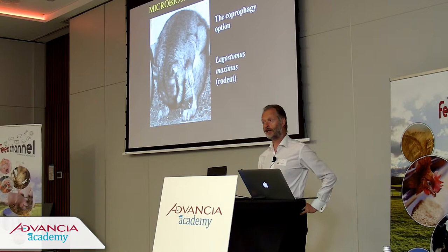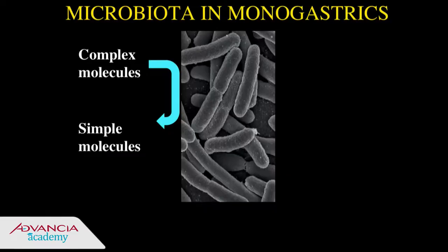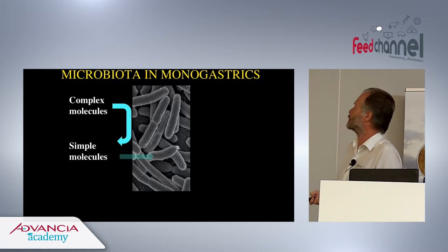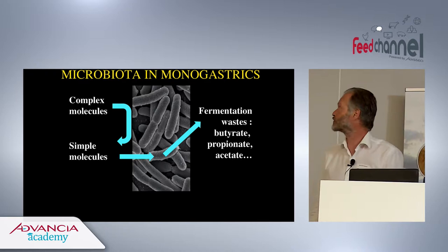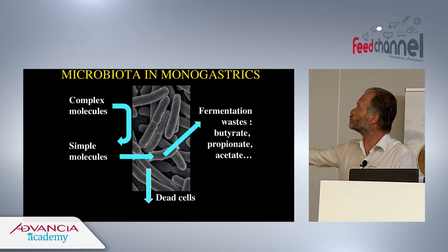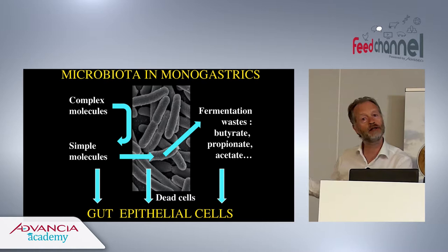You don't need coprophagy to use your bacteria. Monogastrics — animals with a very simple, primitive stomach, like we have — have bacteria in the intestine which break down complex molecules into simpler ones, doing the same as their own enzymes in this respect. This allows bacterial biomass to develop and produces fermentative waste: butyrate, propionate, acetate. This also produces dead cells — some cells have accidents, they break, and liberate their content. All of that can be used by the gut epithelial cells.